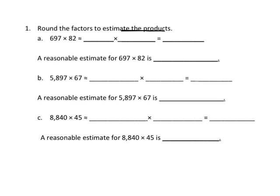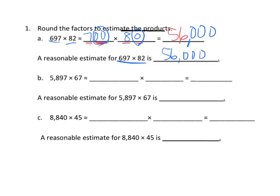697 is about 700, and 82 is about 80. Then we multiply: 7 times 8 is 56. This is really 700 and really 8 tens, so we have two zeros and an extra zero, giving us a total of 56,000. So our reasonable estimate for 697 times 82 is 56,000.